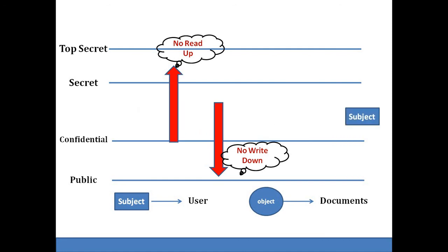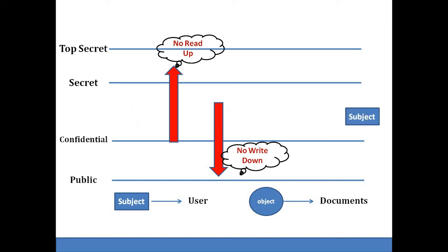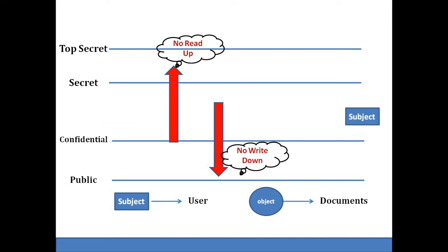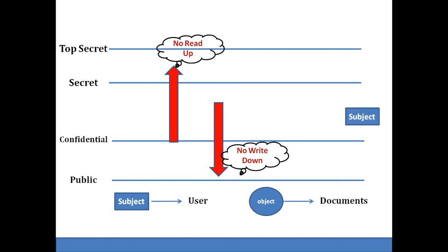In the next diagram, again four types of information are shown with their levels of priority. Here, a user is allowed to access confidential documents, so their level is confined to confidential documents. Hence this user can read and write all documents between secret and confidential. But this user cannot be allowed to read any document one step up — that is, secret documents — which is the no read up rule. Similarly, this user cannot be allowed to write one step below — that is, public documents — which is the no write down rule. By this way, the Bell-LaPadula model maintains the confidentiality of all documents at different levels.